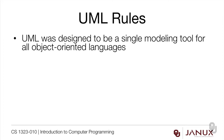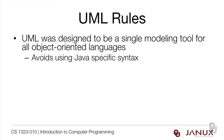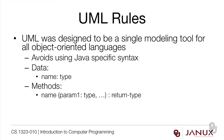UML is designed to be a single modeling tool for all object-oriented languages — it's not specific to Java, so it avoids any Java-specific syntax. For data it puts the name first, then a colon, then a type. For methods it puts the name, then parameters in parentheses with name-colon-type separated by commas, then closes parentheses and puts a colon and the return type. Although this is correct UML, what's really important is that you do design — that's a critical skill. These little nuances in UML aren't so important.